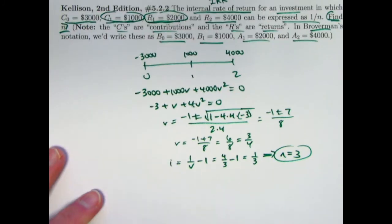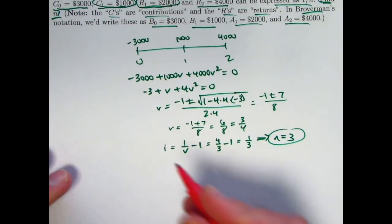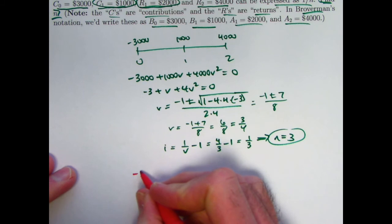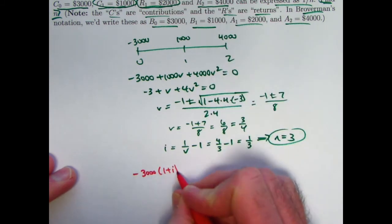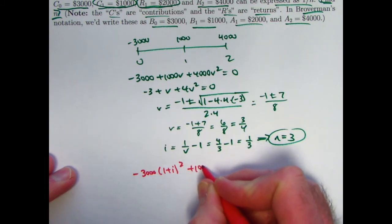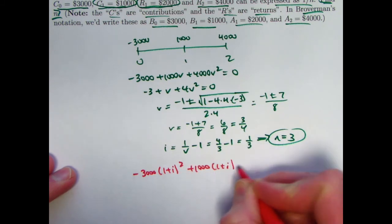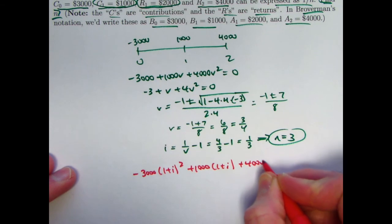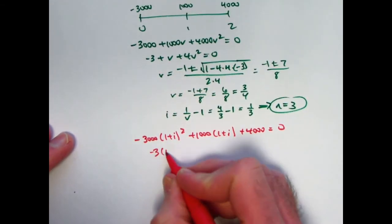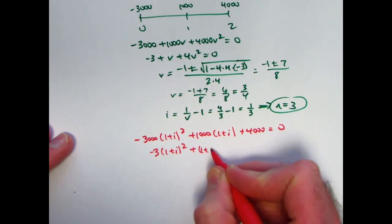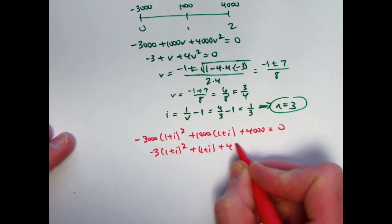Let's also quickly do this as a future value equation. Future equation of value negative 3,000. Go to time 2. 1 plus i squared plus 1,000 times 1 plus i plus 4,000 equals 0. Again, we can divide everything by 1,000, get negative 3. 1 plus i squared plus 1 plus i plus 4 equals 0.